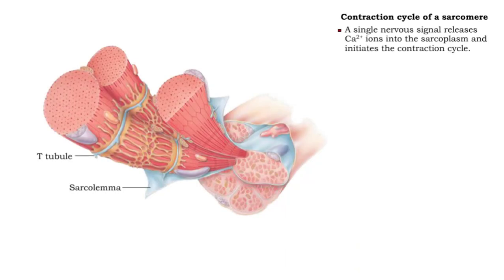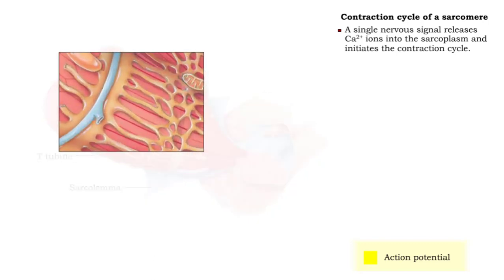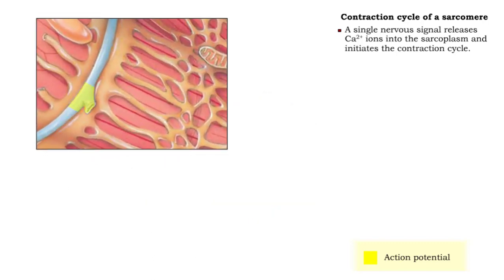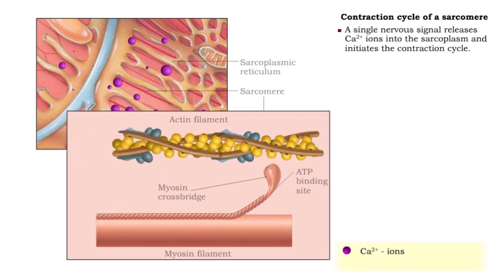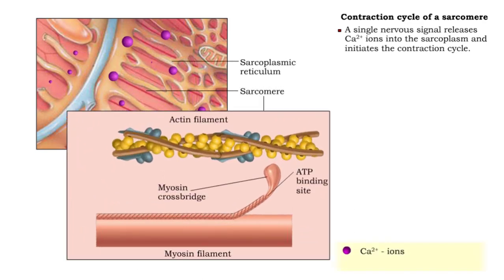A muscle action potential triggers the release of calcium ions into the sarcoplasm, initiating a contraction cycle. A single contraction cycle consists of four steps.